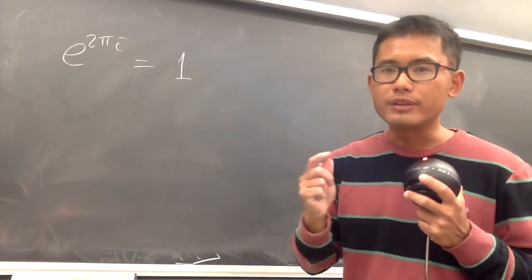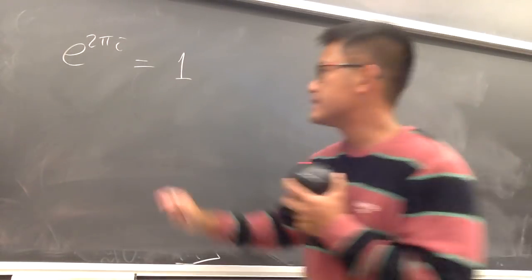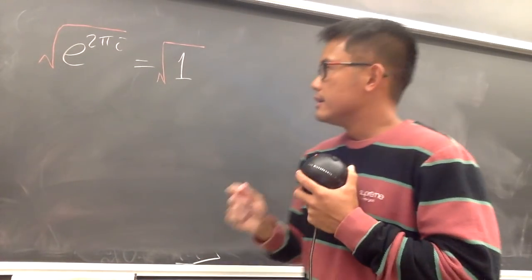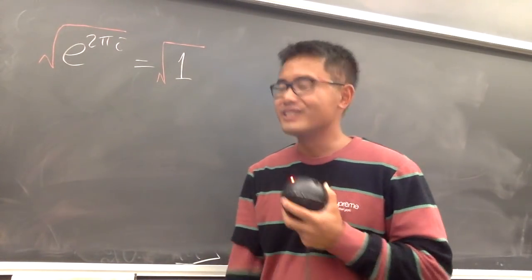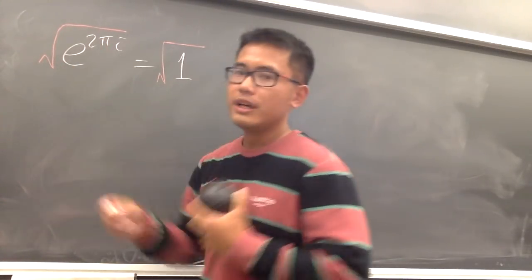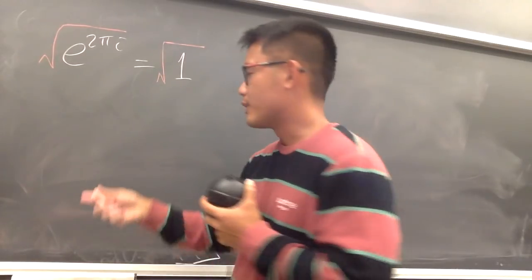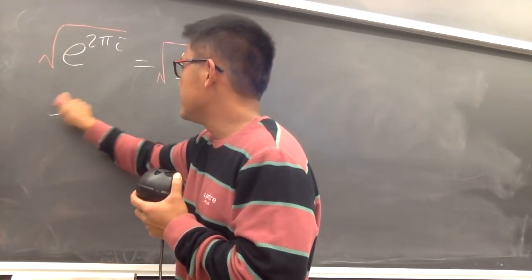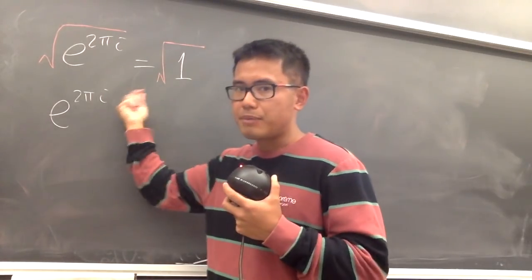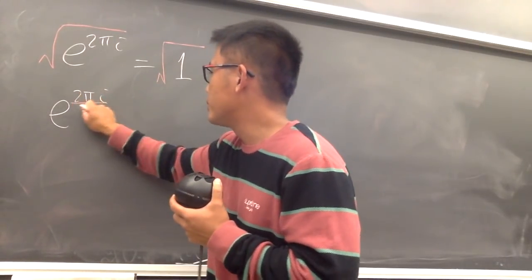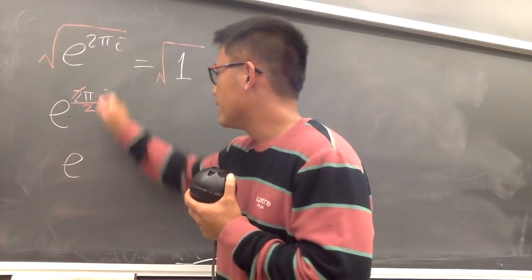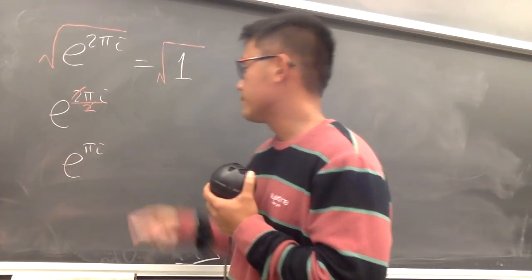And now I will take the square root on both sides. Let's do the harder one first, which is the left-hand side. When you take the square root, it's the same as taking it to the 1/2 power. So you can look at this as e to the 2πi, take that to the 1/2 power — divide this power by 2. The 2 and 2 cancel, and you just get e to the πi.